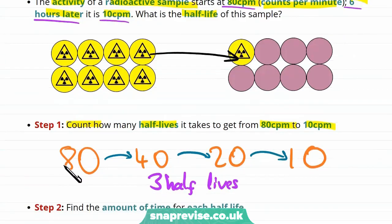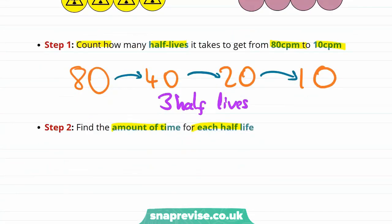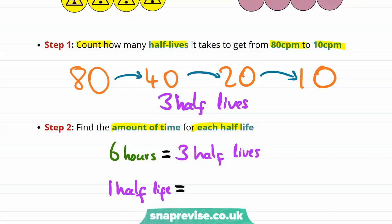Now we can use that to find the amount of time for each half-life. We were told that this process took six hours. So that means that six hours is equal to three half-lives. And so from this we can see that one half-life must be equal to two hours. So that's our final answer. We've managed to figure out that each half-life is two hours.